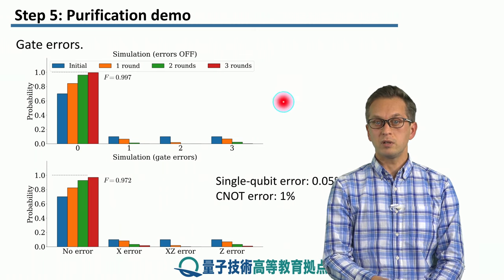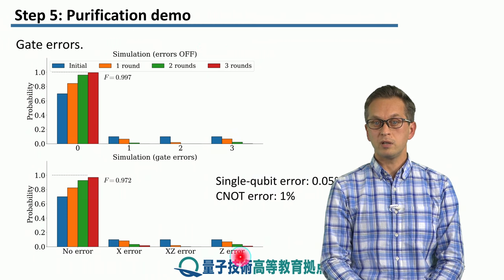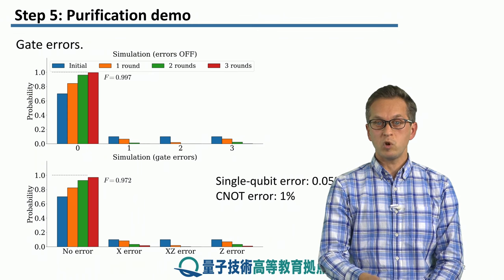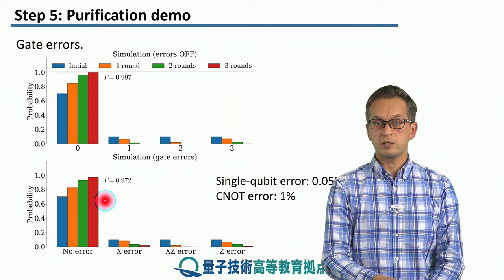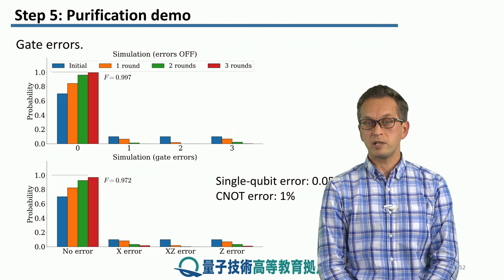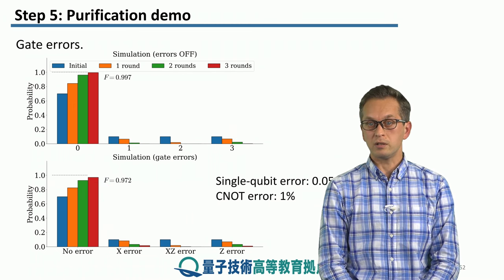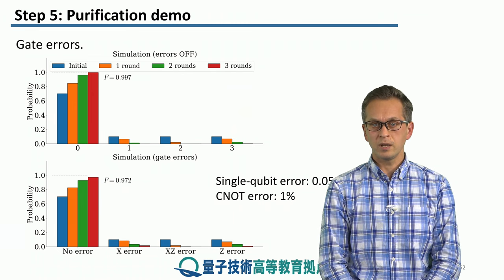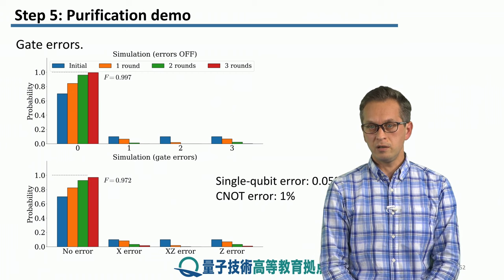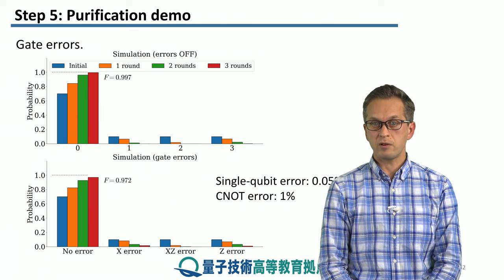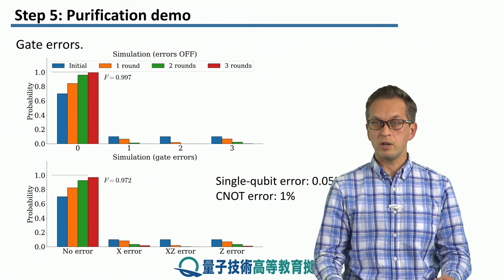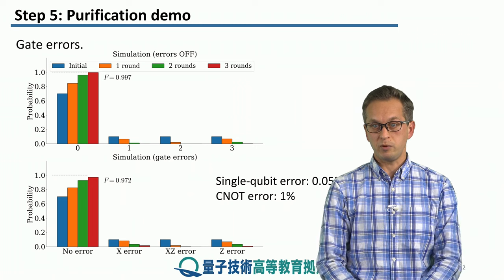At the top we have our simulation result for no errors whatsoever, and over here this is the simulation including gate errors. What we observe is that the fidelity after three rounds has dropped somewhat — not drastically, but it's definitely lower than for the simulation where there were no errors. Next, on top of this gate error, we're going to add memory errors. These are errors of the qubits that are sitting in our quantum memories and decohering while they have to wait for their partner that they can purify with.